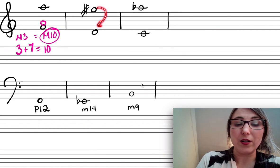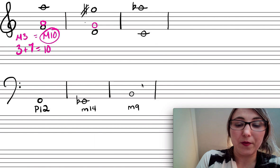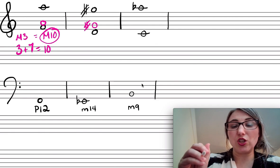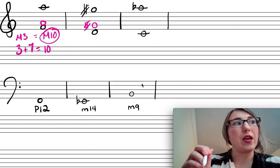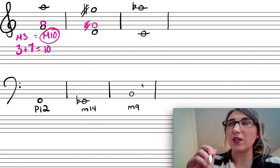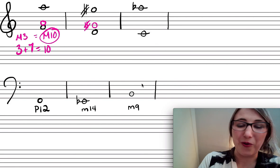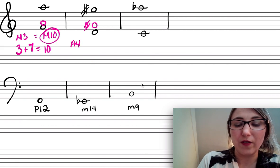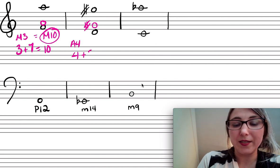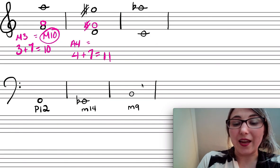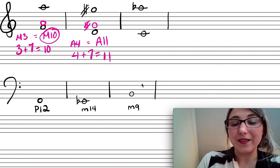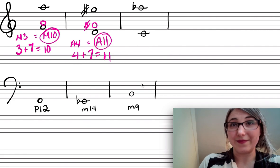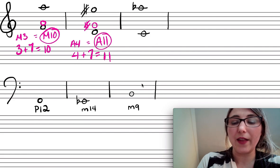Let's try another one. I'll move this G-sharp down an octave. D up to G is a perfect fourth, so D up to G-sharp would be an augmented fourth. The compound version is 4 plus 7 equals 11, so this is an augmented 11th.